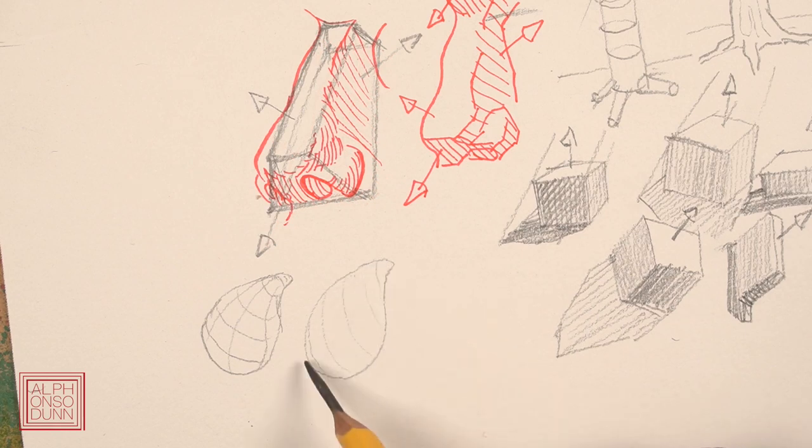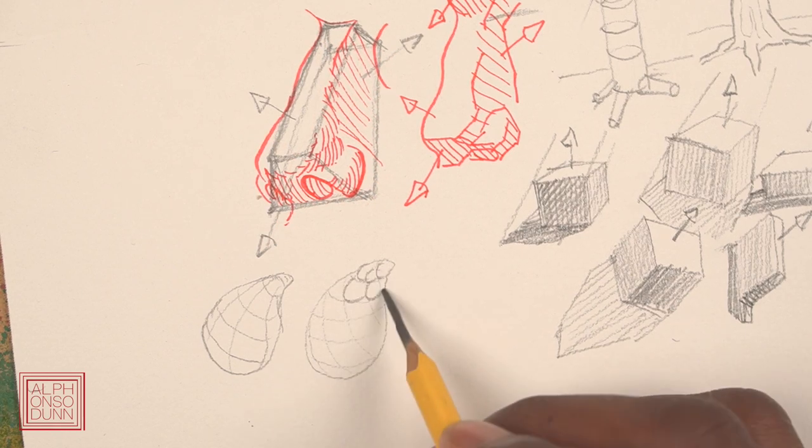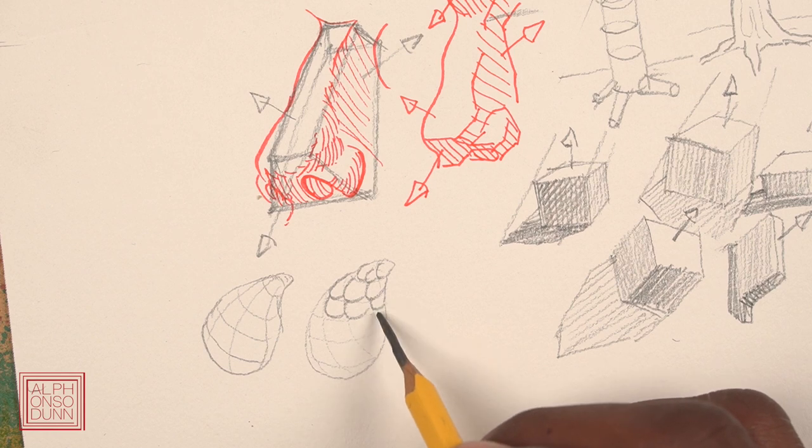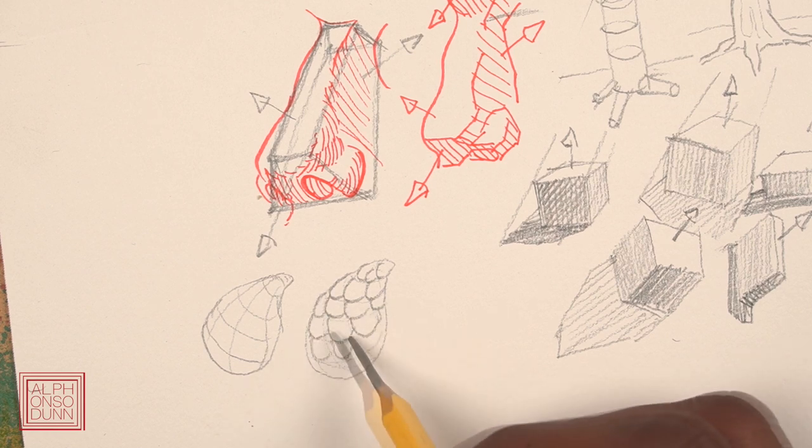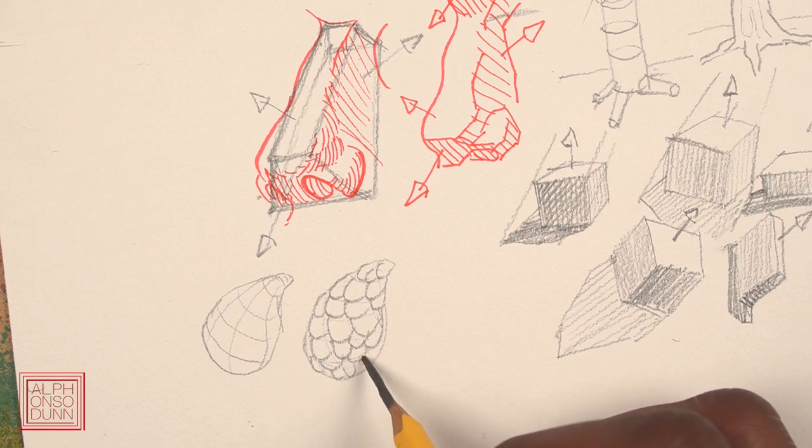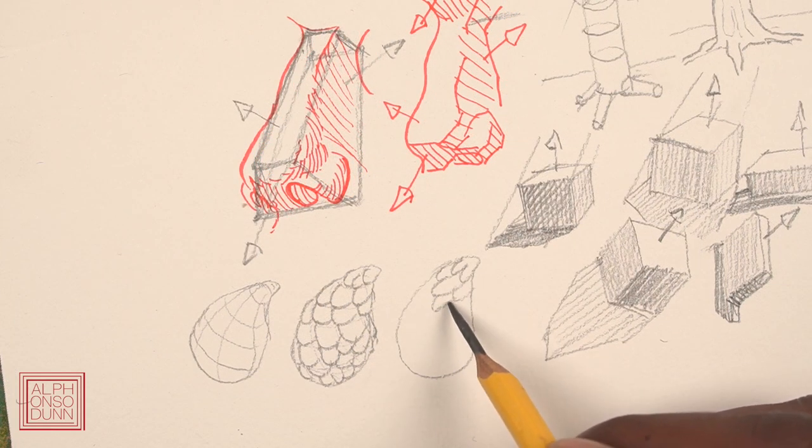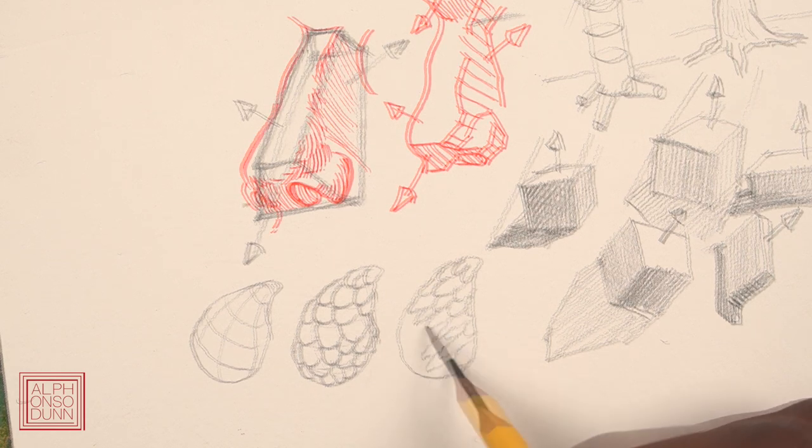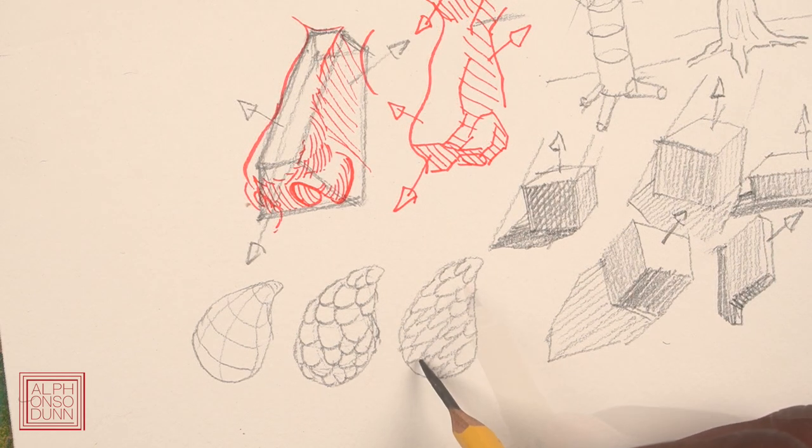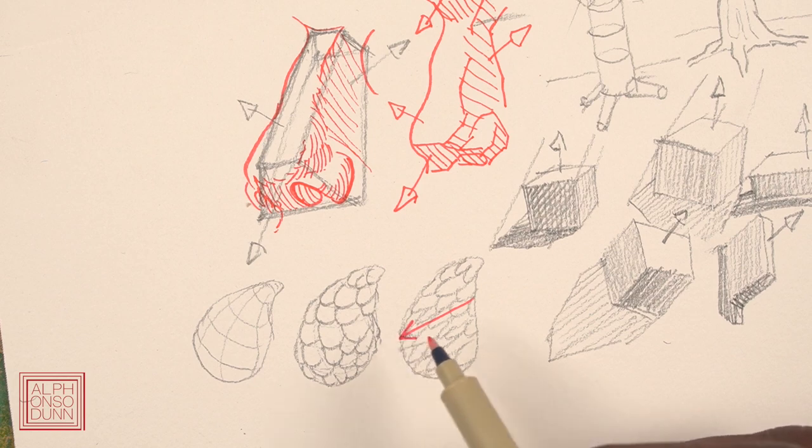Now, one of the most common drawing mistakes is to put details before structure. And I see this a lot, especially with students, when students are rendering texture. No matter how dazzling or mesmerizing your textures are rendered, if they're not modeled based on structure, they will appear just as flat patterns.